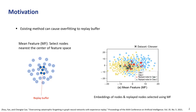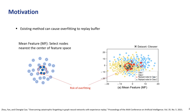This is the motivation of our research — the problem we wanted to solve. A recent state-of-the-art Graph Continual Learning method selects some replay nodes nearest the center of feature space, which can cause overfitting to the replay buffer, as shown in this example.